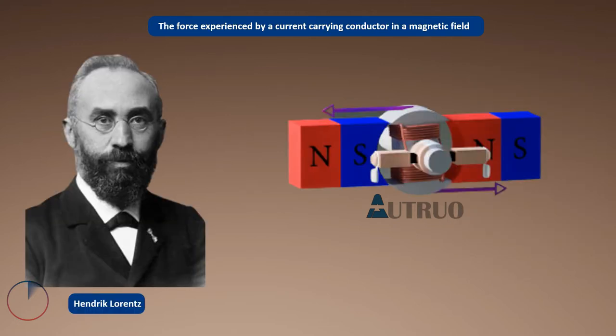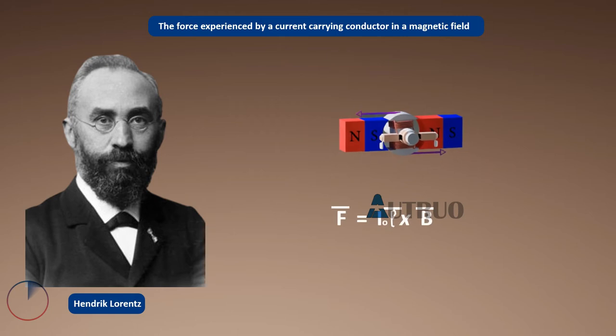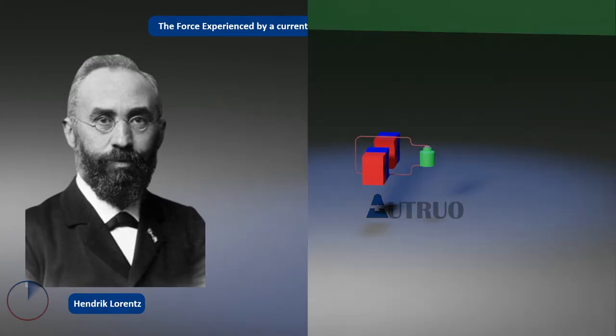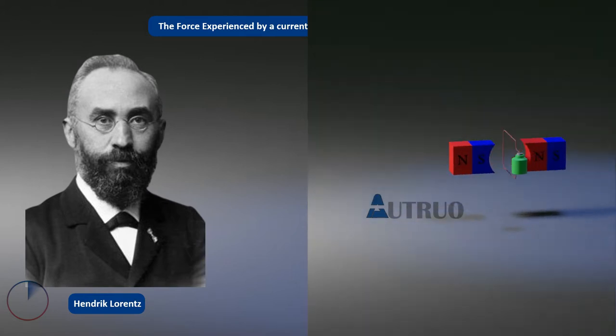Hendrik Lorentz is a Dutch physicist. He was credited to have given the foundation for electric generators and electric motors. He discovered that whenever there is a current carrying conductor in a magnetic field, that current carrying conductor will experience a magnetic force. That is, the electromagnetic force experienced by the conductor will be proportional to the flux density, the current, and the length of the wire in the magnetic field.